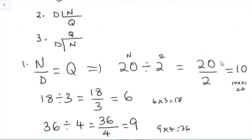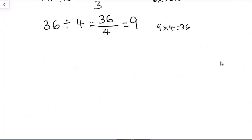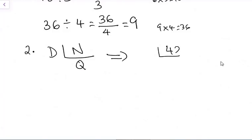Let's look at the second format, where we have the denominator on the outside. So we have the denominator, then the numerator inside, and we arrive at the quotient. Our first example: we have 42 and 7. We are asking how many times will 7 go in 42? That would be 6 times. And if we multiply 6 by 7, it gives us 42.